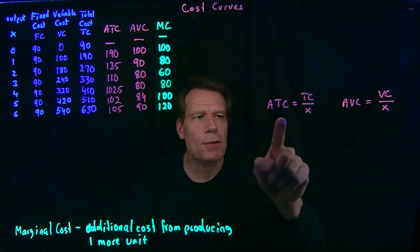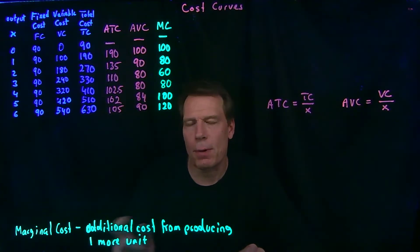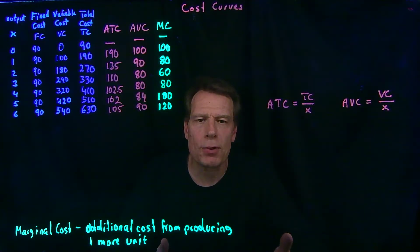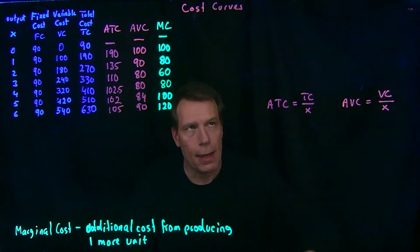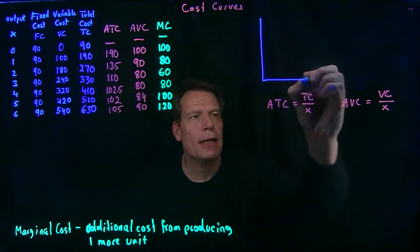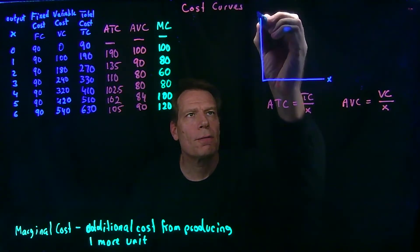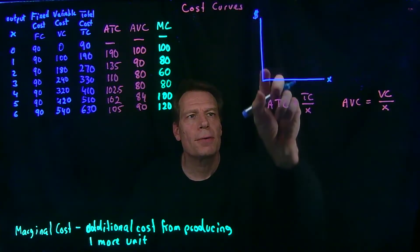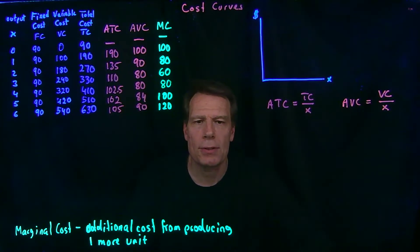Now that we know the definition of average total cost, average variable cost, and marginal cost, we can derive the general shapes of what we call the cost curves of the firm. A cost curve always has output on the horizontal axis and dollars on the vertical, because we're trying to illustrate how the costs measured in dollars change as output changes.